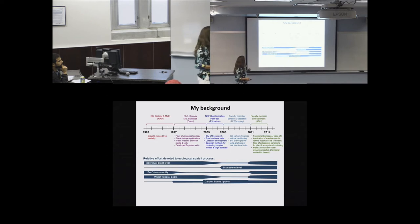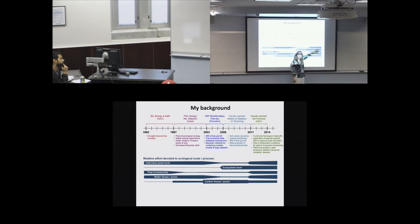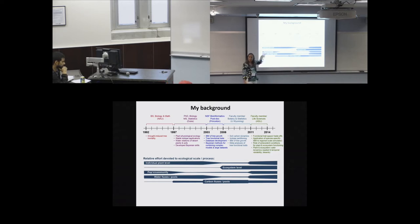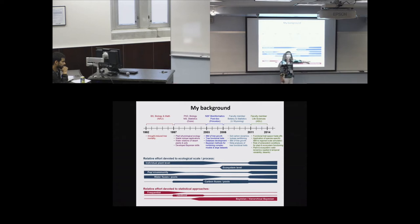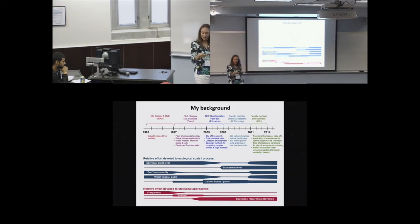How did my efforts devoted to various ecological scales evolve over my career? I started at the individual plant scale, went to more ecosystem scale, and now I work at both. I've focused a lot on water and carbon relations. In terms of statistical approaches, I started with training in frequentist-based methods through undergraduate, then likelihood methods. But as soon as I started taking my first Bayesian class, I became converted — though I have a background in all of these methods, not just Bayesian.